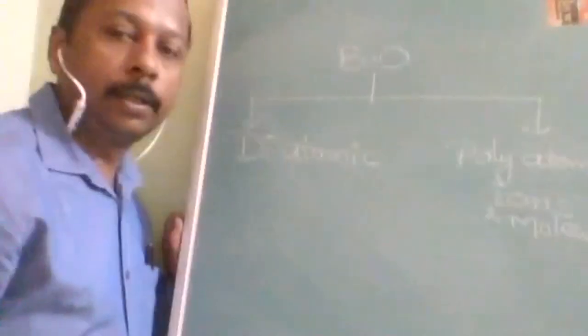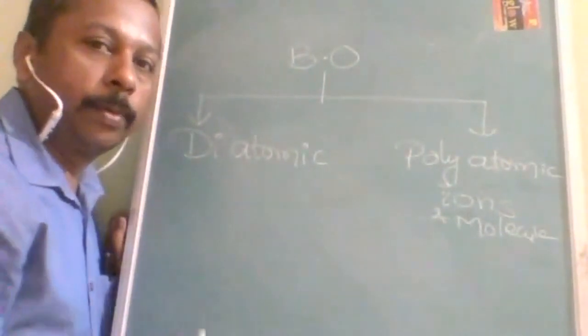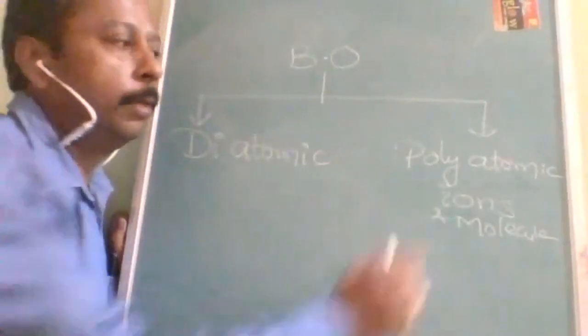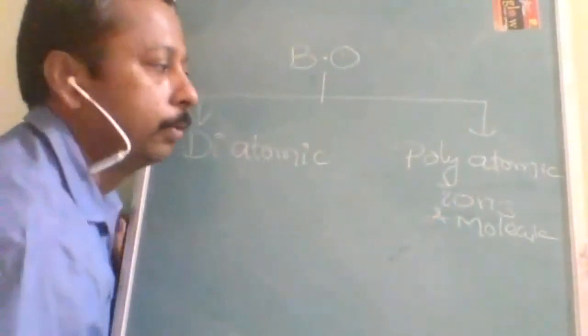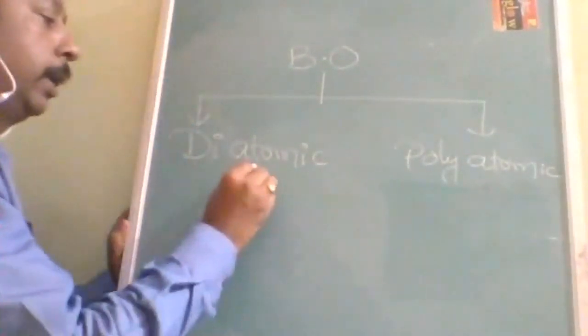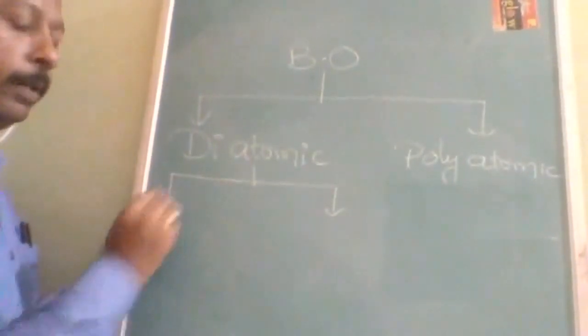So this is how I have divided this total entire topic into two parts: bond order diatomic and polyatomic. OK, polyatomic again ions and molecules. OK, so better to make it into again two parts. So in diatomic part, again I'm dividing it into two different parts.